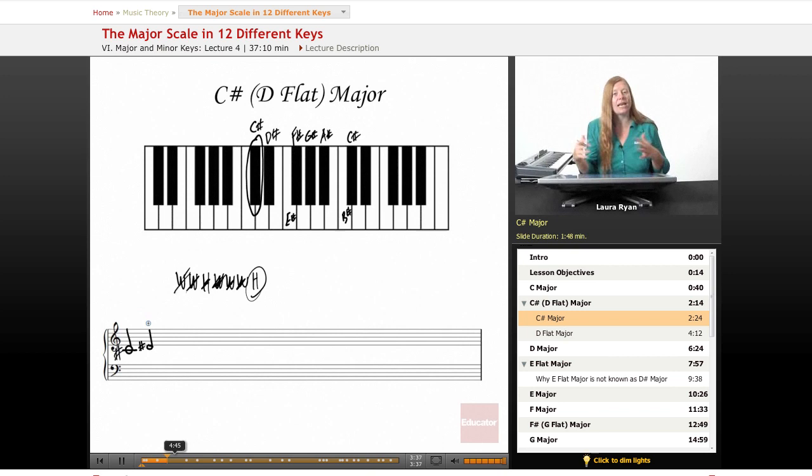C sharp, D sharp. E sharp is actually a white key, also known as F natural. F sharp, G sharp, A sharp, B sharp, C sharp. Every note is sharped.